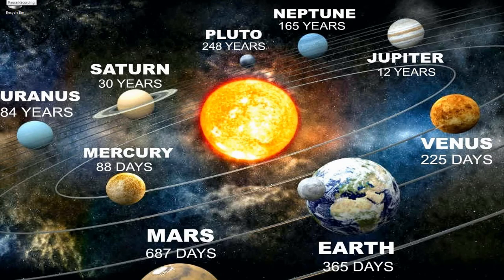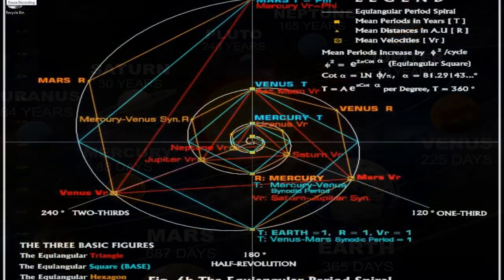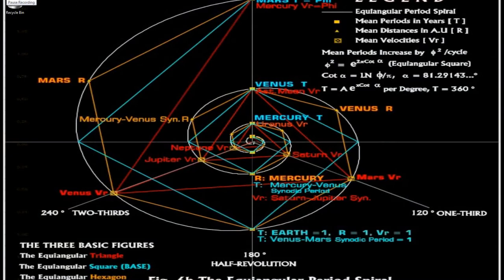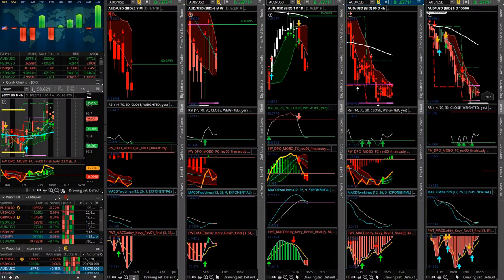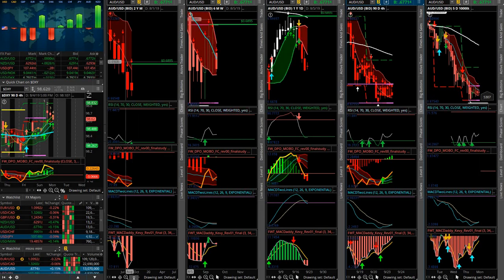Hey guys, today is September 23rd of 2019. I want to go over the Aussie dollar using WCAN price and time technical analysis. Let's get right into it.